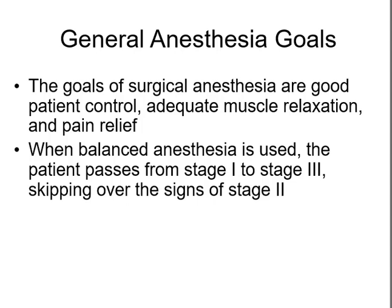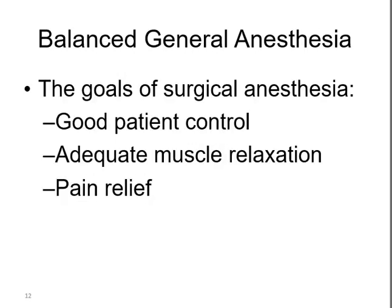The goals of general anesthesia are good patient control, good muscle relaxation, and pain relief. They like to use balanced anesthesia, meaning the patient skips from stage one to three, skipping over the signs of stage two. Many agents can produce general anesthesia and each has its own adverse reaction profile. There are some ultra-short acting IV barbiturates that accomplish this transition readily.